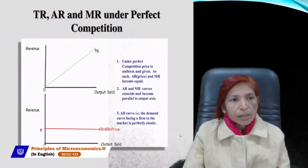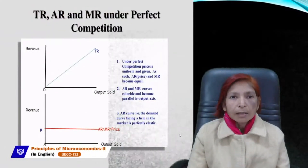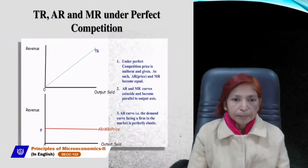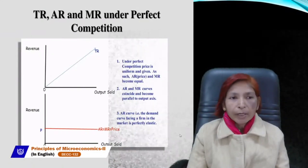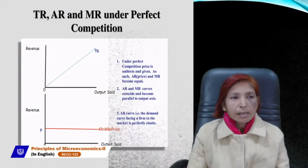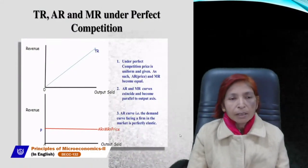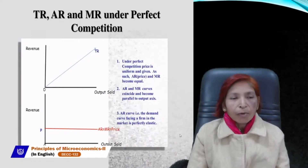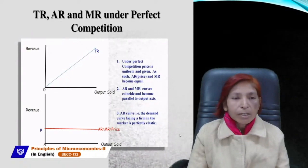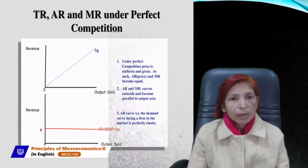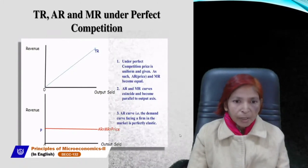Next are TR, AR, and MR under perfect competition. TR is total revenue, AR is average revenue, and MR is marginal revenue. We need to understand the shape of these curves under perfect competition.